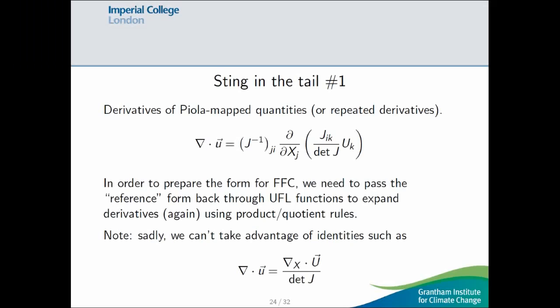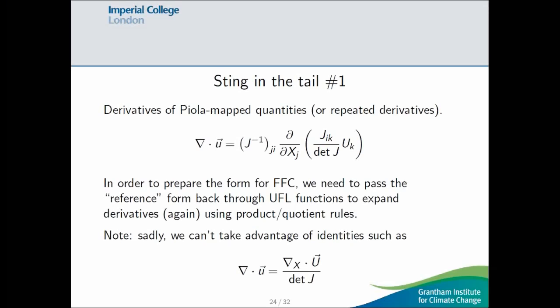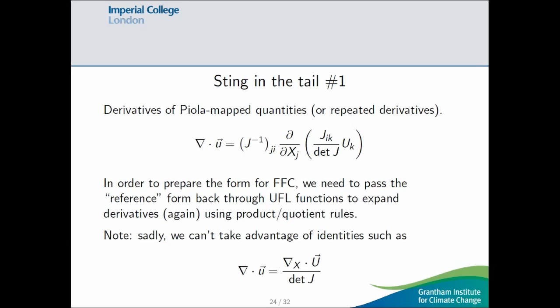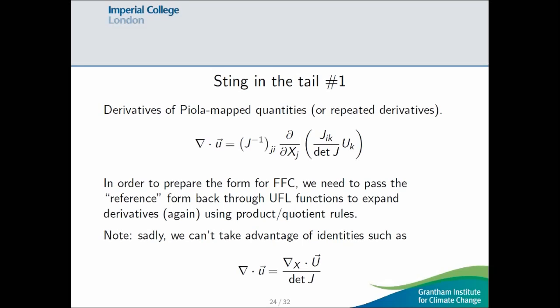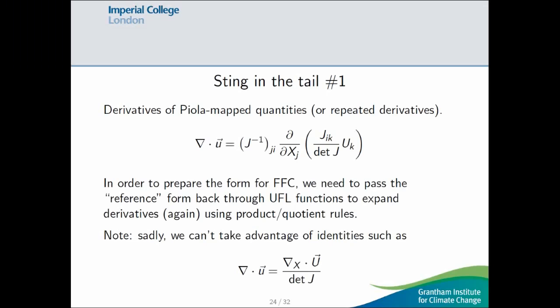So, okay, this implementation is correct, but there's a few problems. One of the problems is, what happens if you encounter the derivative of a Piola map quantity? So, such as this div u we saw before, where this u is like an RT element. So, this gets converted into something involving inverse Jacobian, d by dxj of some expression involving the Jacobian. And in order to get this form into the form that FFC expects, we need to blow up all these derivatives again. So, we need to pass this form back through the UFL differentiation functions and using the product and quotient rules. And this gets messy.